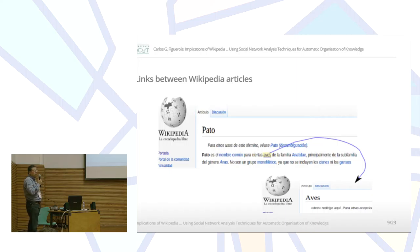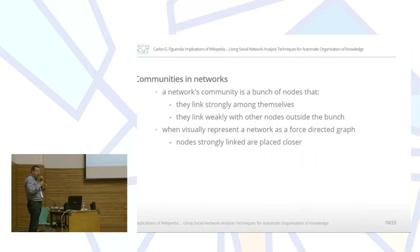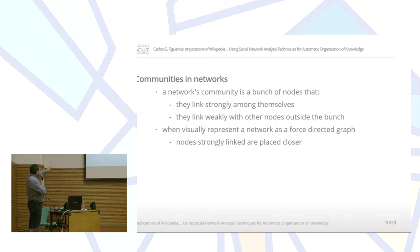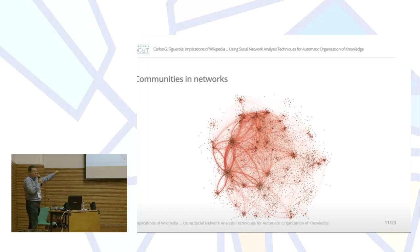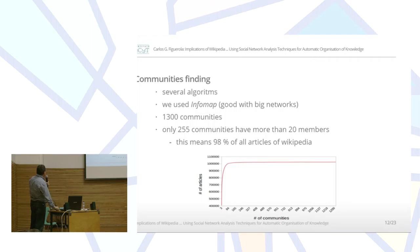We can represent Wikipedia as a network and apply techniques from network analysis. A network community, for example, is a bunch of nodes that link strongly between them and link weakly with the other nodes outside of this bunch. For example, this is only a small piece of Wikipedia, but we can see the points are the articles and the lines are the edges, the links, and we can see points represented closer because they are strongly linked between them.